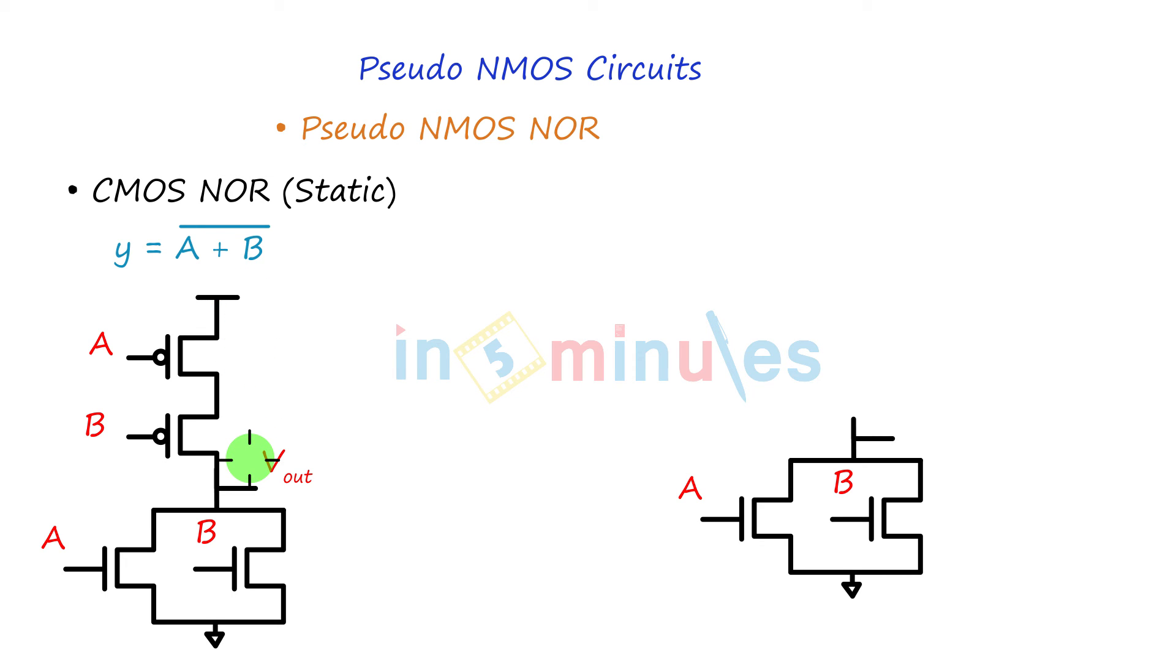A, B, Vout. Here, only one pullup. That is nothing but a PMOS transistor whose input is grounded. And this will be nothing but my Vout.